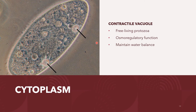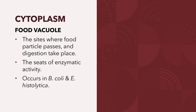Within the cytoplasm are organelles including the contractile vacuole, which occurs mainly in free-living aquatic protozoa. These are small, rounded vacuoles appearing in the cytoplasm that coalesce to form contractile vacuoles with osmoregulatory function, maintaining water balance. Food vacuoles are sites where food particles enter and digestion takes place; they are also sites of enzymatic activity. Examples of protozoa with food vacuoles are Balantidium coli and Entamoeba histolytica.